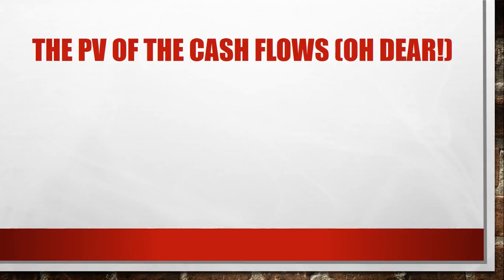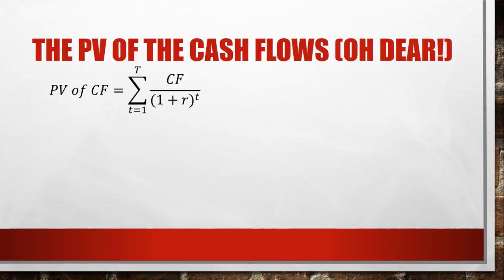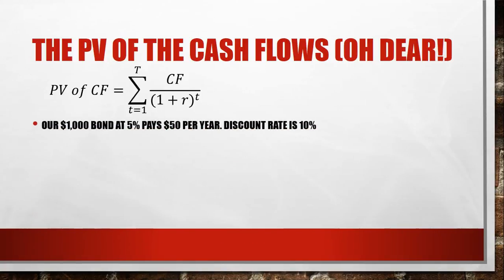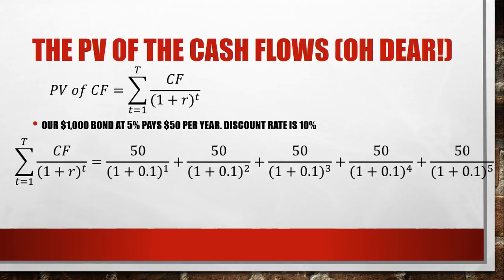The next part is the present value of the cash flows. This looks much more complicated, but it's actually really simple when you notice the pattern. The formula is the summation of all of the cash flows divided by one plus the discount rate, raised to the power T. In our example, you get this enormous formula — don't panic when you first look at it. Each cash flow in this case is five percent every year, so you're getting fifty dollars every year. Some bonds have different values, so you wouldn't necessarily have the same number on top.